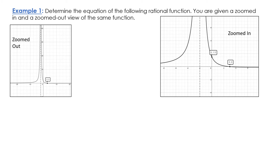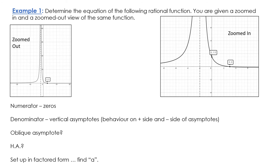Example one: determine the equation of the following rational function. We have two different views of the same function. We've got all these pieces to figure out. First, the numerator comes from the zeros. We've got a zero at the coordinate (3, 0), or x equals 3, so the factor would be x minus 3 — that would be a factor in the numerator. And that's the only zero we can see.